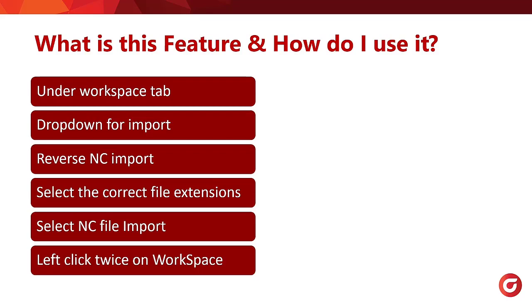So what is this feature and how exactly can you start using it? Under the Workspace tab, you're going to click the dropdown for Import, then click on Reverse NC Import. You're going to select the correct file extension, select the NC file to import, and then left-click twice on the workspace to actually place that part.